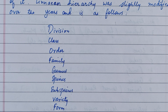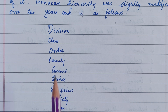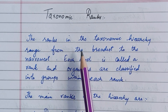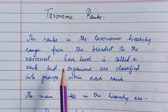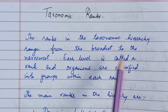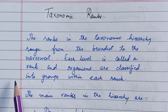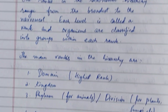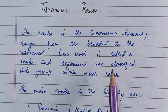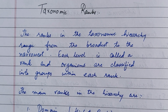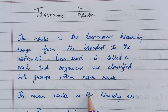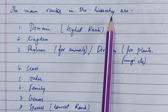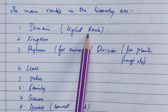In taxonomic hierarchy, we organize or classify living organisms based on these taxonomic ranks. The ranks in the taxonomic hierarchy range from the broadest to the narrowest. Each level is called a rank. Domain is the highest rank.